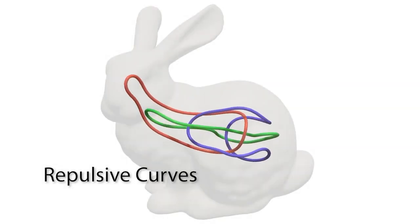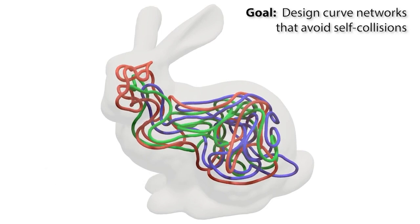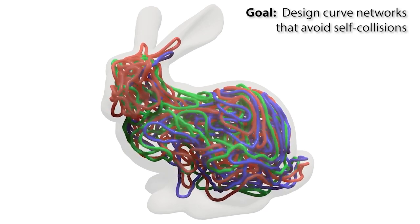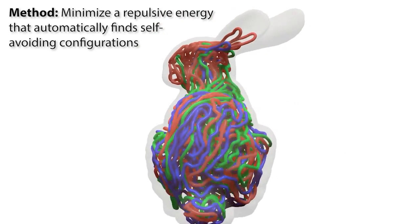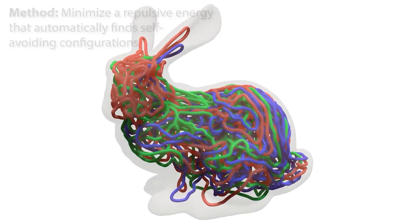In this paper, we present a method for global collision avoidance on curves. Rather than simply applying ad hoc repulsive forces between pairs of elements, our method comes from discretizing a principled repulsive energy on continuous curves, whose gradient quickly reaches globally self-avoiding configurations.